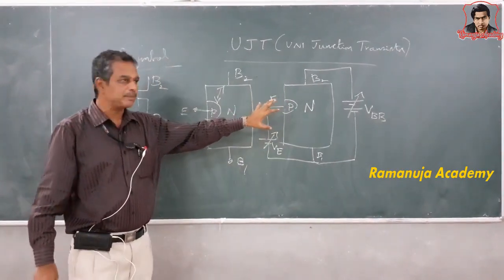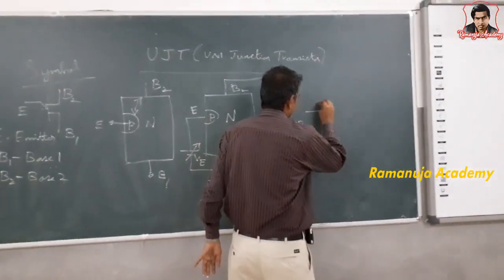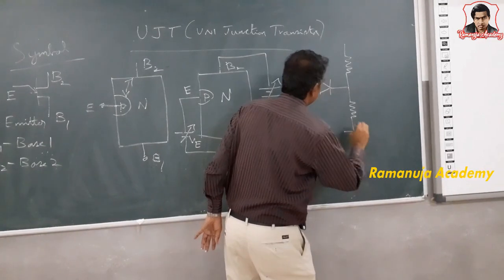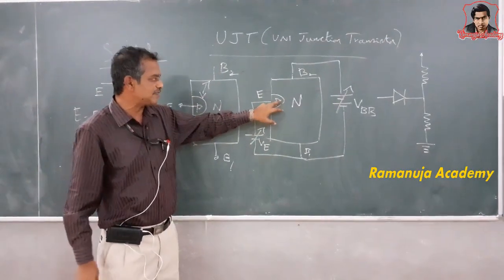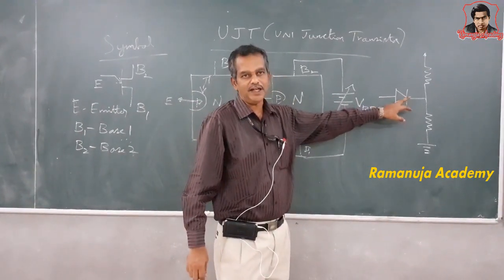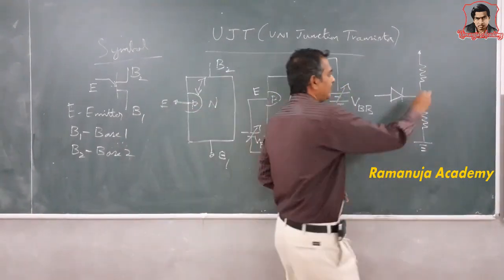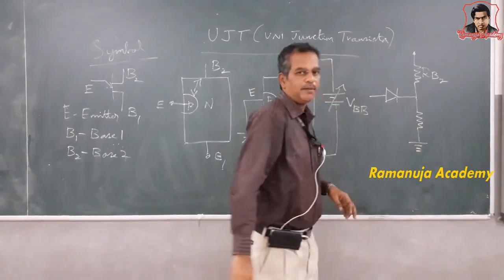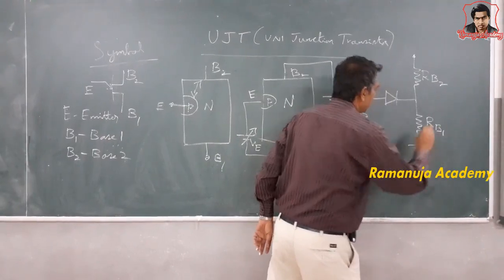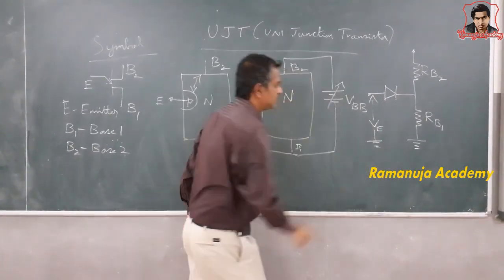For explaining the working principle of the unijunction transistor, I am going to draw a simple equivalent circuit. In the circuit, I have replaced the junction — this is a P-type semiconductor and this is an N-type semiconductor — with a diode. The resistance between the emitter and base 2 I represent as RB2, and the resistance between the emitter and base 1 I represent as RB1. This voltage is my VE.